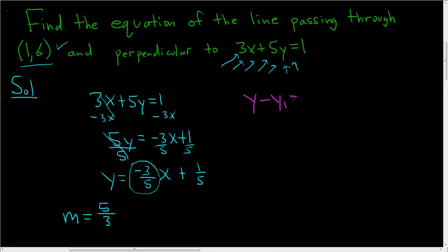So y minus y1 equals m times x minus x1. So y minus, well y1 is 6 and x1 is 1. So y minus 6 equals m, which is 5 thirds, times x minus 1. So y minus 6 equals 5 thirds x minus 5 thirds.